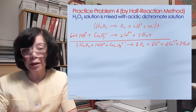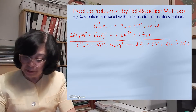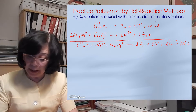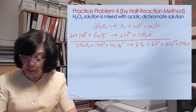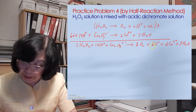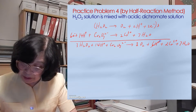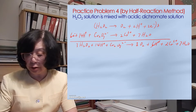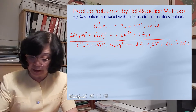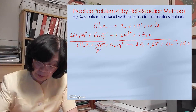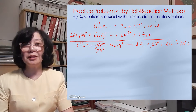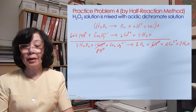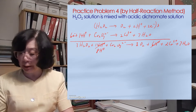The electrons are already cancelled. Note that I have hydrogen ion on both sides as reactant and product, so I combine them together — cancel the 6 moles of hydrogen ion on the product side — giving 8 moles of hydrogen ion on the reactant side. The net charge is plus 6 on both sides, so I know the equation is balanced correctly.